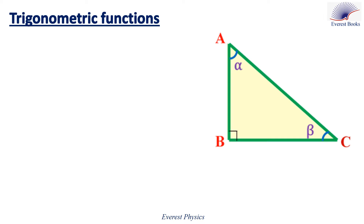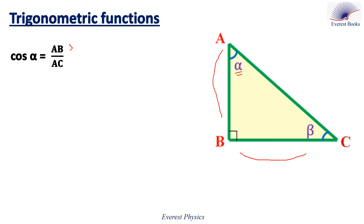Let's study the sine and the cosine functions in trigonometry. Consider the right-angled triangle ABC. Now look at the angle alpha. Side AB in the triangle is the adjacent side for the angle alpha, while side BC is the opposite side for this angle. Cosine alpha equals the adjacent side AB over the hypotenuse side AC. The hypotenuse side is the longest side in the triangle. Therefore, AB equals AC cosine alpha.